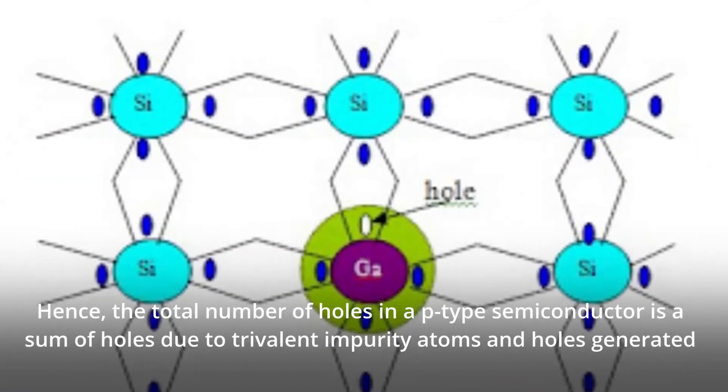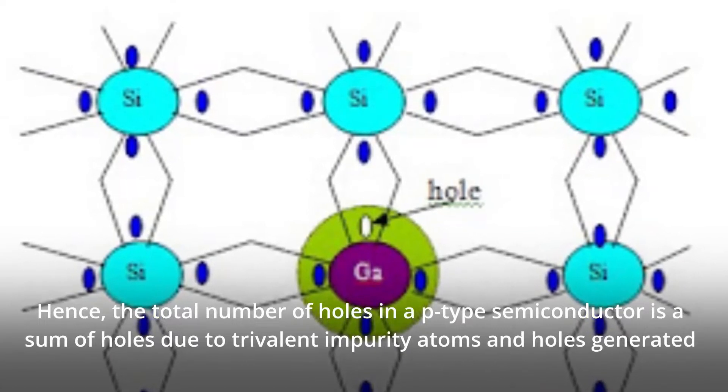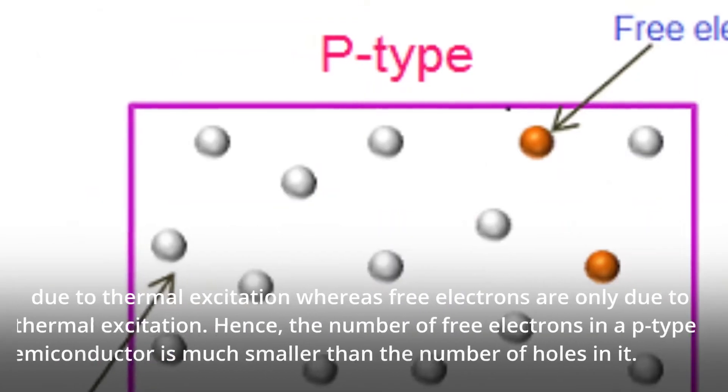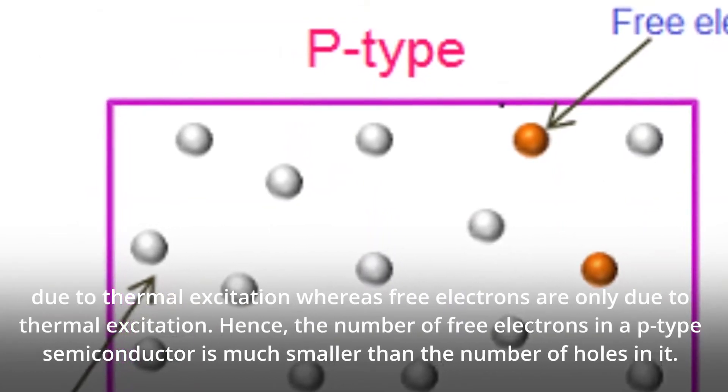Hence, the total number of holes in a p-type semiconductor is a sum of holes due to trivalent impurity atoms and holes generated due to thermal excitation, whereas free electrons are only due to thermal excitation.